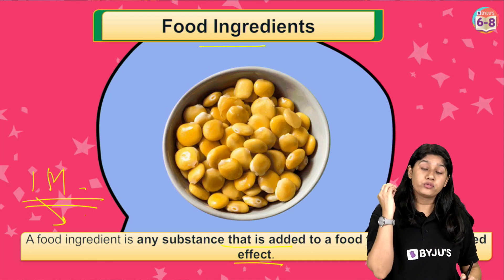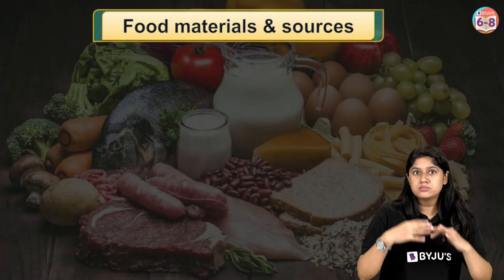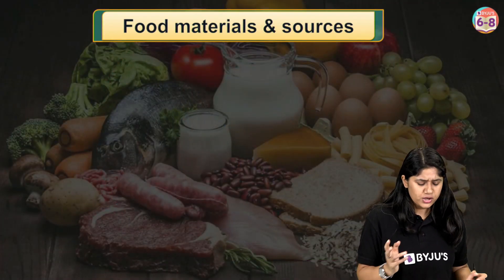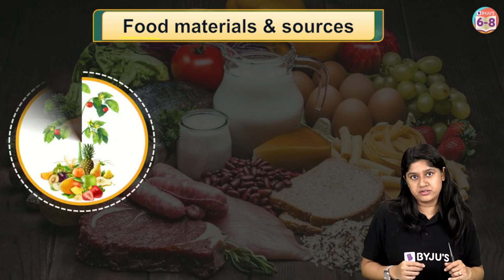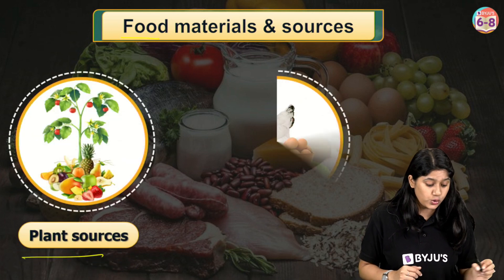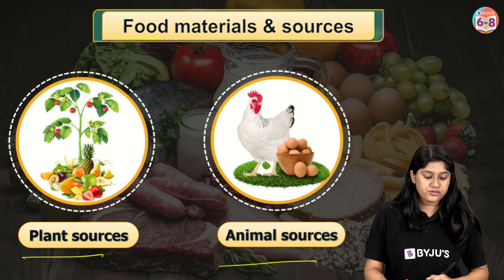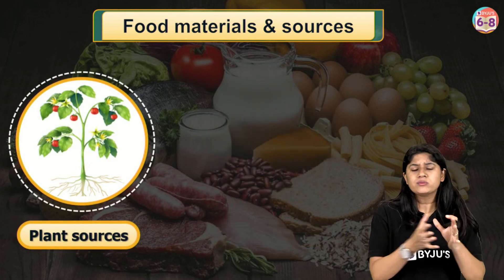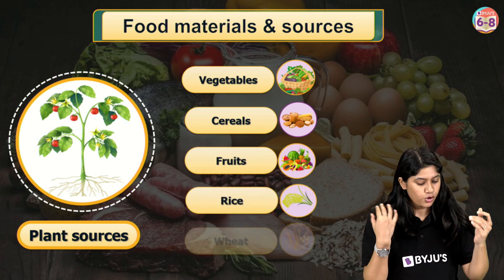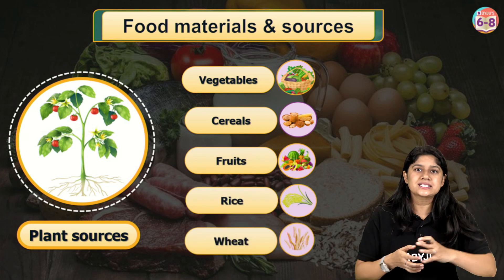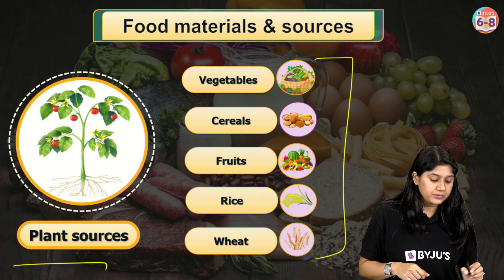Now that we're clear with food ingredients, let's understand more about food materials and resources. In terms of food resources we have two major categories: plant resources and animal resources. First we'll discuss plant resources. What do we get from plants? We get vegetables, cereals, fruits, rice, wheat — and the list is kind of endless. These are the materials we get from plants.